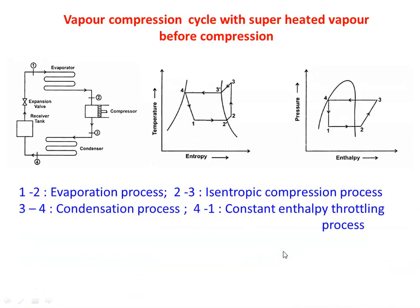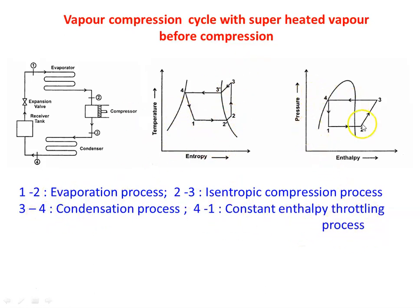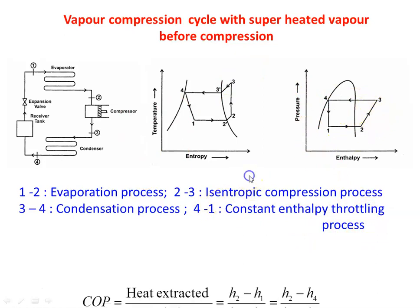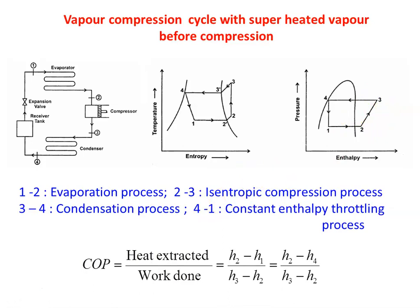The fourth cycle is vapor compression with superheated vapor before compression. Here, both points 2 and 3 are in the superheated region — superheated vapor enters the compressor and superheated vapor leaves the compressor. The vapor is then condensed, expanded, and evaporated again. Processes: 1 to 2 evaporation, 2 to 3 isentropic compression, 3 to 4 condensation, 4 to 1 constant enthalpy throttling. COP equals (H2 − H1) / (H3 − H2) = (H2 − H4) / (H3 − H2).